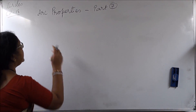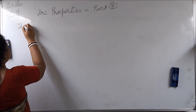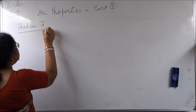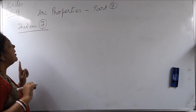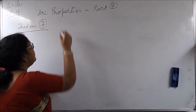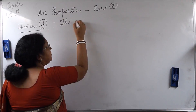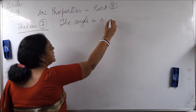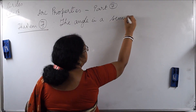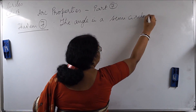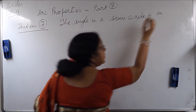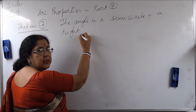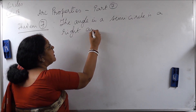So the statement of the theorem — for our convenience we are calling it theorem number 7, but this numbering is not fixed. According to this theorem, the angle in a semicircle is a right angle.